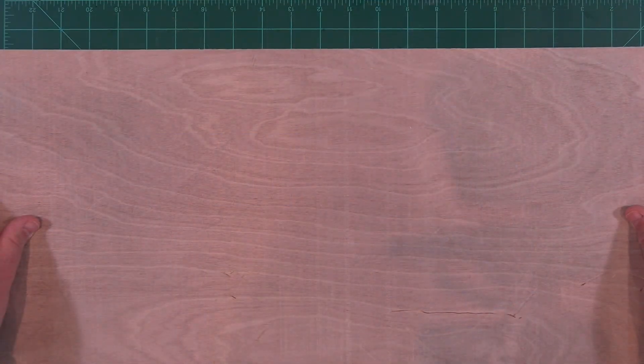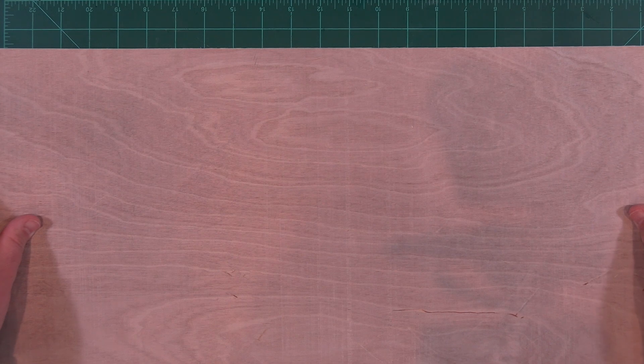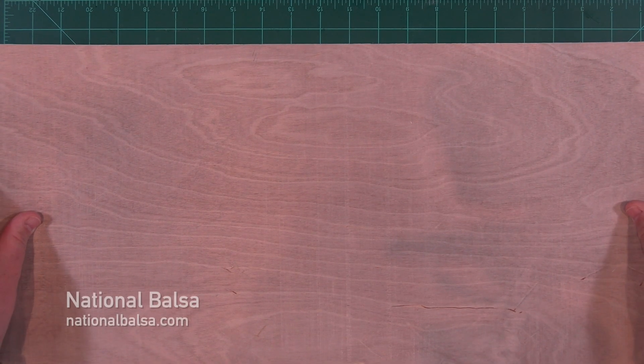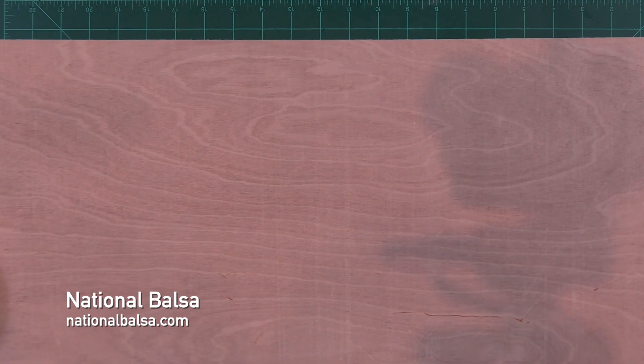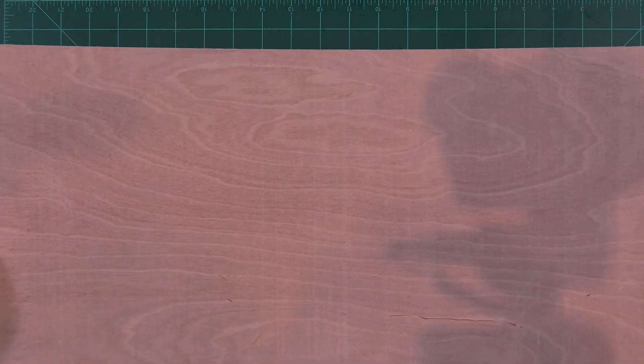The only downside is that it's a bit on the pricey side. I source 12 by 24 inch sheets from National Balsa for about $12 a sheet. Buying several sheets at a time helps keep the shipping cost down.